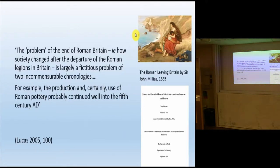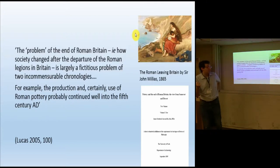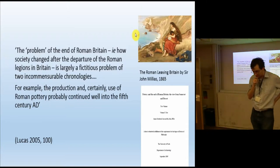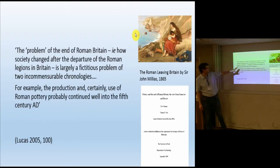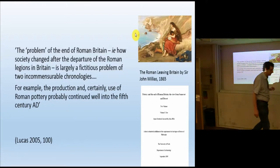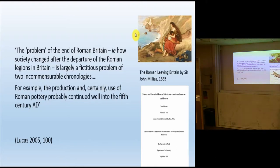Sticking with Lucas for a moment — the Archaeology of Time was published in 2005 when I was writing up my PhD thesis. Those of you who have completed PhDs will know that as you get to the end, you stop reading and you start writing. This book slipped past me in 2005. But there's a certain irony when I read it a few years later, because Lucas says: 'the problem of the end of Roman Britain — how society changed after the departure of the Roman legions — is largely a fictitious problem of two incommensurable chronologies. The production and certainly use of Roman pottery probably continued well into the 5th century.' This was music to my ears because that is the cover of my PhD thesis, September 2005, which is all about pottery and the end of Roman Britain. It's a certain irony to have Gavin Lucas and the Archaeology of Time telling me this wasn't a problem when I had just spent four years of my life writing 90,000 words on this very issue.